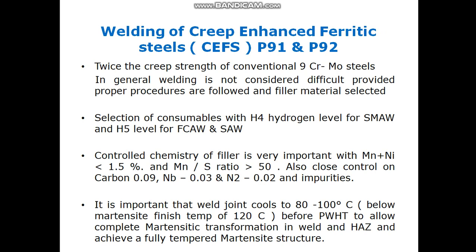Regarding welding of creep-enhanced ferritic steels — CFEs — P91 and P92 have twice the creep strength of conventional 9Cr1Mo steel. Welding is not considered difficult provided proper procedures are followed and filler material is selected. The key rule is to use low-hydrogen consumables: H4 level for SMAW, and H5 level for FCAW and SAW — meaning 4 mL and 5 mL of hydrogen per 100 g of weld metal respectively.